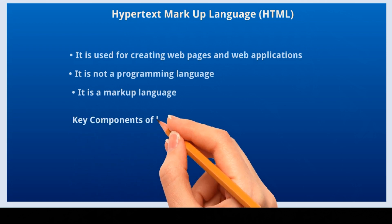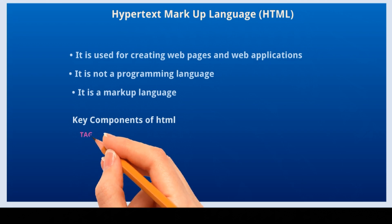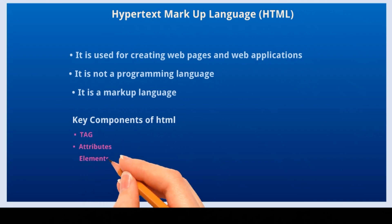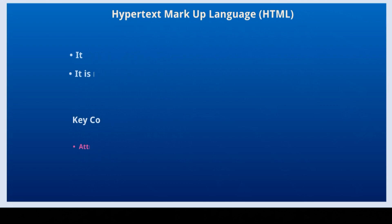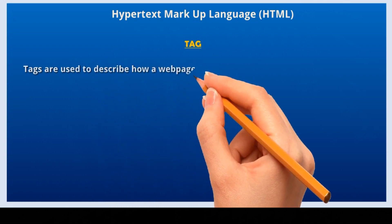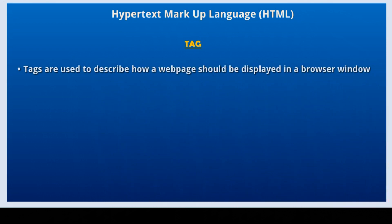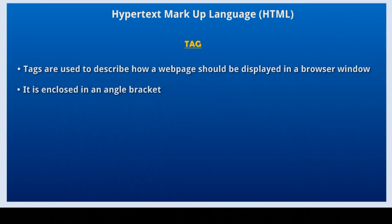What are the key components of HTML? Tag, attribute, and elements. Now we can study the HTML component: tag. Tags are used to describe how a web page should be displayed in a browser window. It is enclosed in an angle bracket.